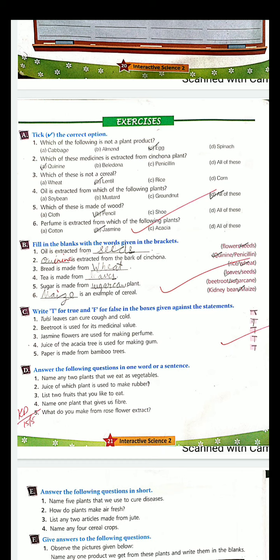Dash is extracted from the bark of synchona. So we read upstairs - up there - in the tick the correct option that we get quinine from the synchona plant. So what is the answer? Quinine.